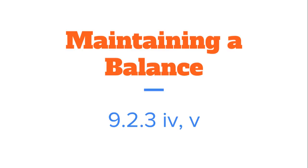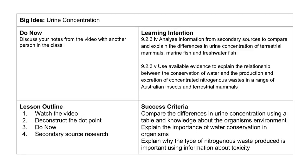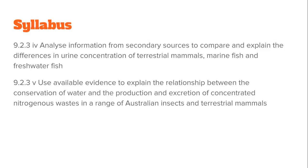Welcome to Maintaining a Balance, video 14. In this video we're going to be focusing on how urine concentration changes between different organisms and depending on the environment in which they live. We're going to be looking most commonly at mammals, but also at fish that live in both saltwater and freshwater environments, and how those environments affect the amount and concentration of waste that they produce.